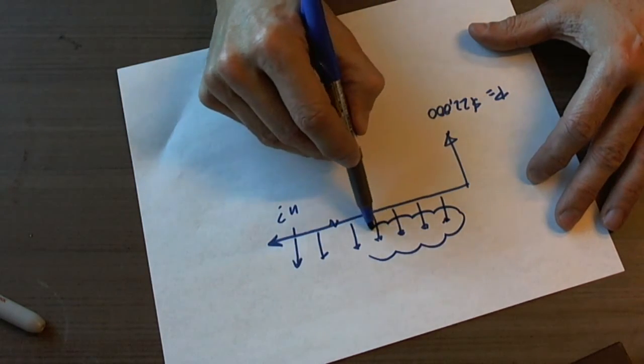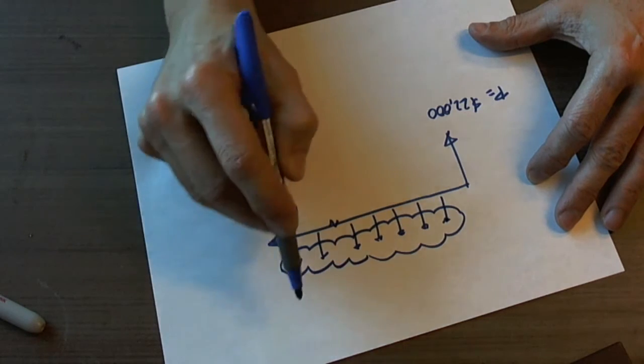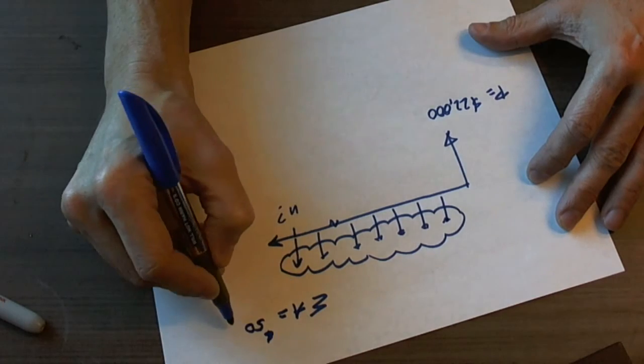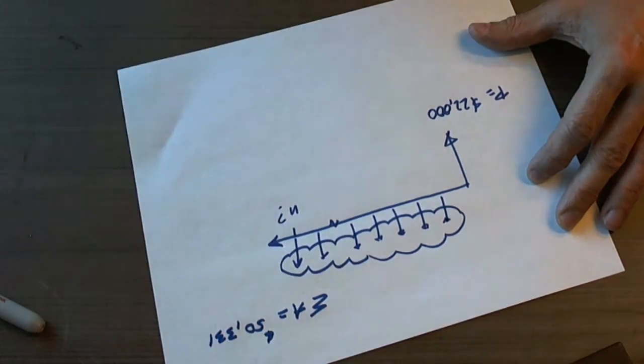Instead, the given information in problem 5 is the sum of all the payments, which is equal to $50,331.